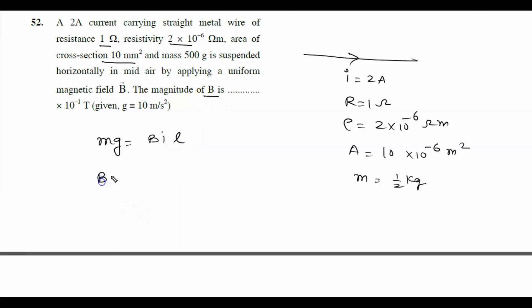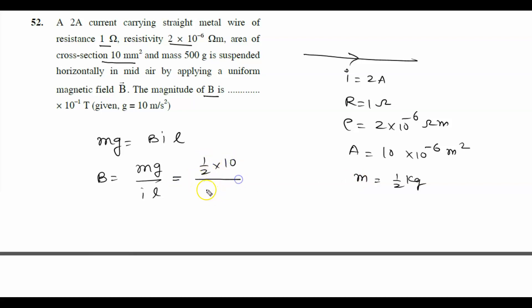We have to calculate the value of B, which is written as mg upon I×L. Mass is 1/2 kg, gravity is 10 m/s², current is 2 ampere. Now we need to calculate the length L.